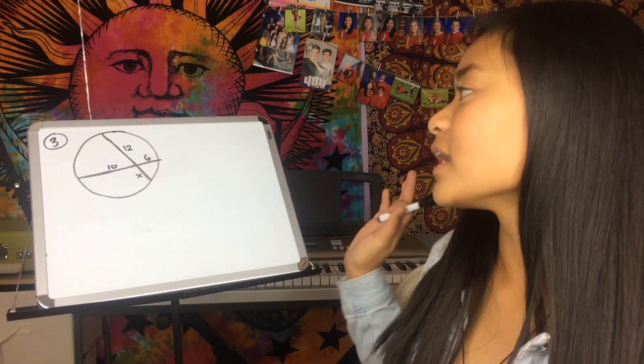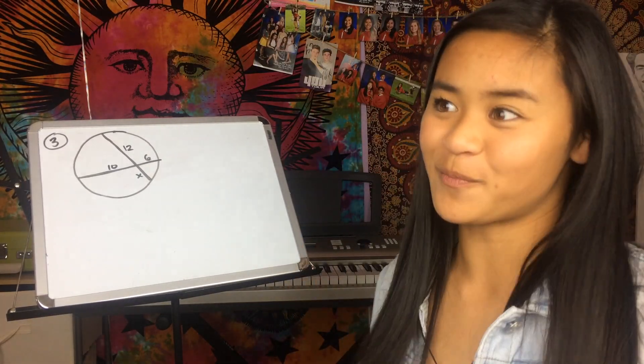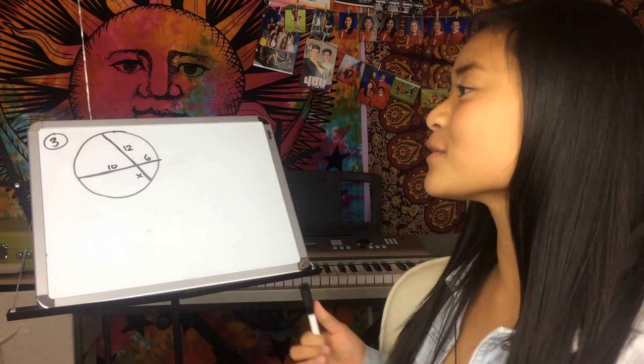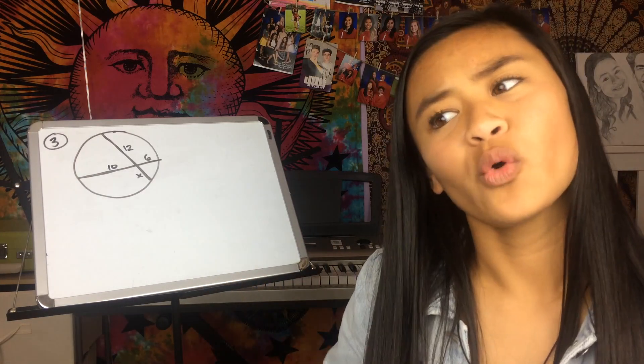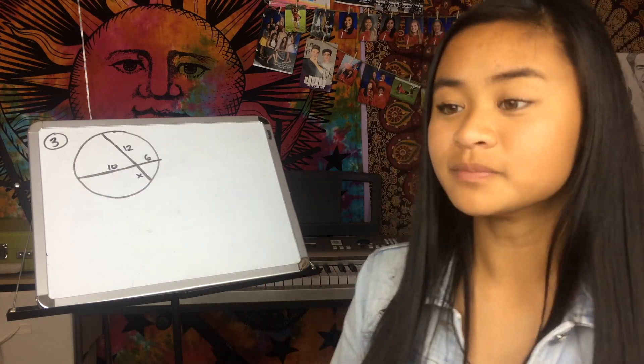Can anyone tell me what our first step will be? We will be using the Segments of Chords Theorem. What is the Segments of Chords Theorem? The Segments of Chords Theorem states that when two chords intersect inside a circle, the product of the lengths of one chord equals the product of the lengths of the other chord. Also, when two chords are inside a circle, the chords are each divided into two segments.